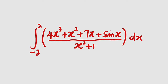Hello, good day viewers. In this tutorial we would like to evaluate this definite integral: the integral of 4x³ + x² + 7x + sin(x) divided by x² + 1, with respect to x, from negative 2 to 2.